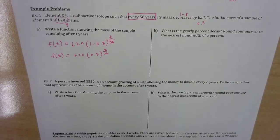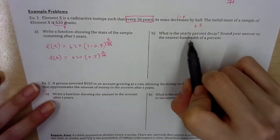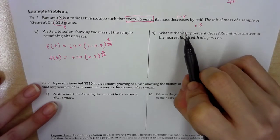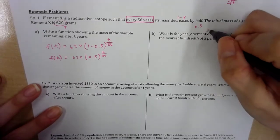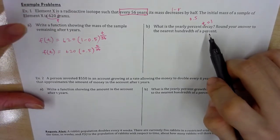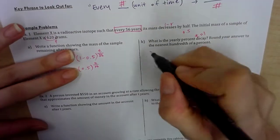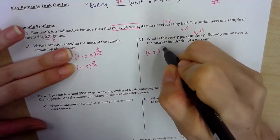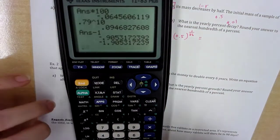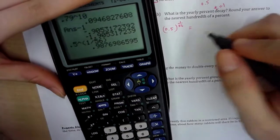So this would be the function that accurately models what's happening. I'm going to simplify the base. Now B says, what is the yearly percent decay? Round your answer to the nearest hundredth of a percent. So this is asking you'll find me the r, the percentage I lose after one year.